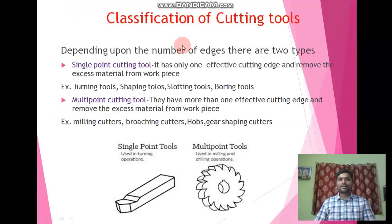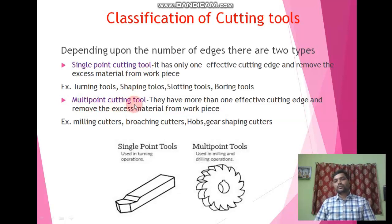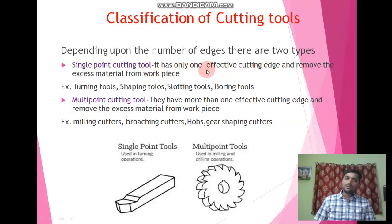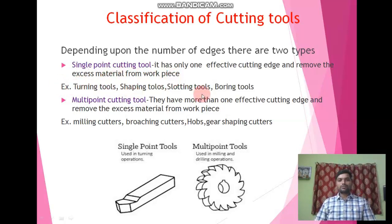In this session, we are going to discuss about the classifications of cutting tools. There are two types of cutting tools: the first one is the single point cutting tool and the second one is the multi-point cutting tool. A single point cutting tool has only one effective cutting edge, which removes excess material from the workpiece. Examples include turning tools, shaping tools, slotting tools, and boring tools.